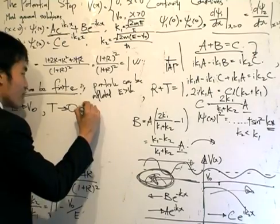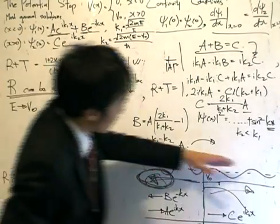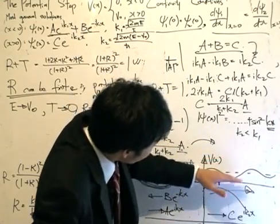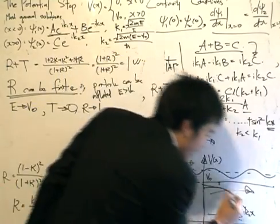And we can also say that the reflection coefficient tends towards one. Now, the energy is greater than V-naught, right, as I decrease it, now I know that if I decrease it below the potential, I'll get this thing called the decaying solution.